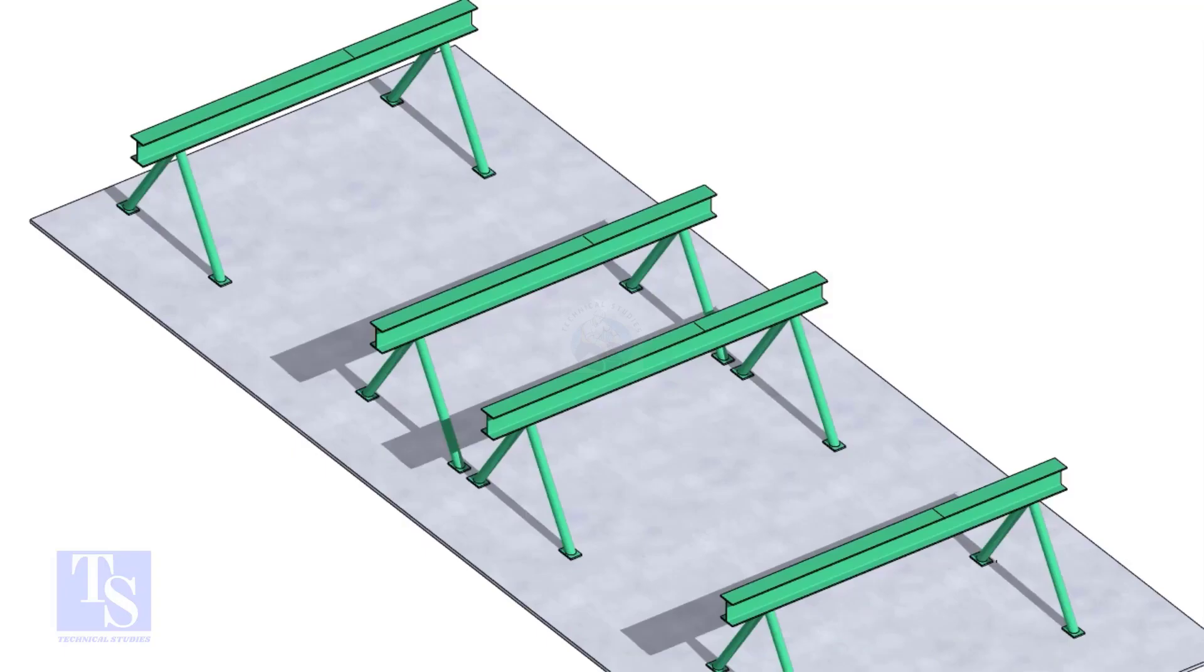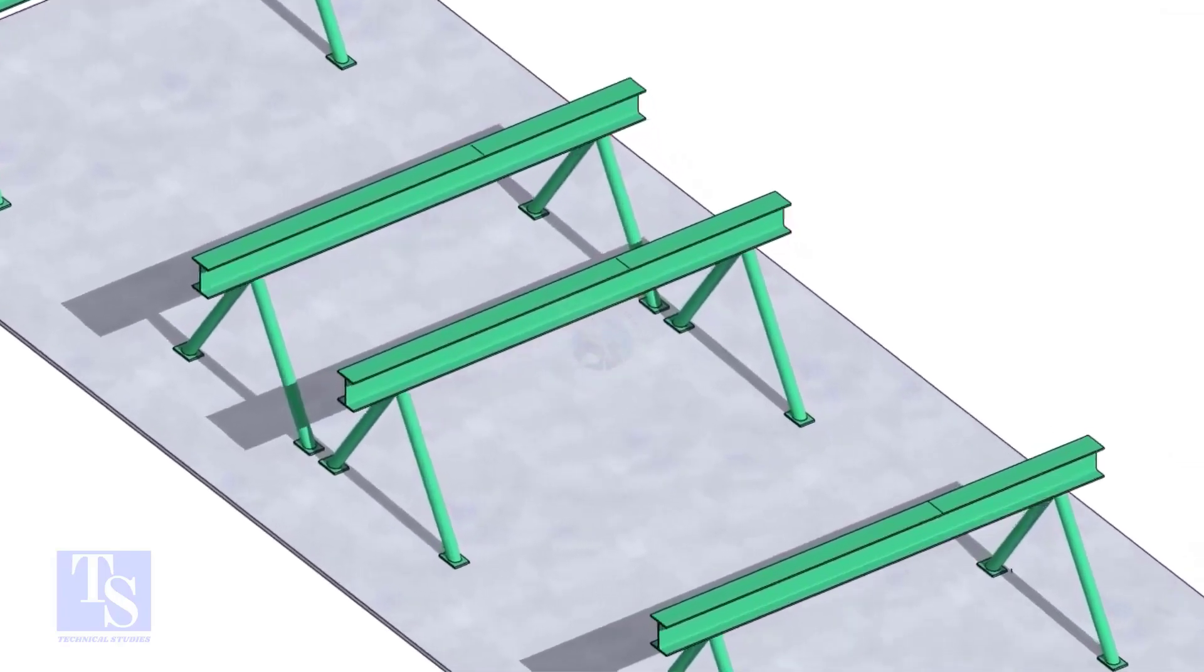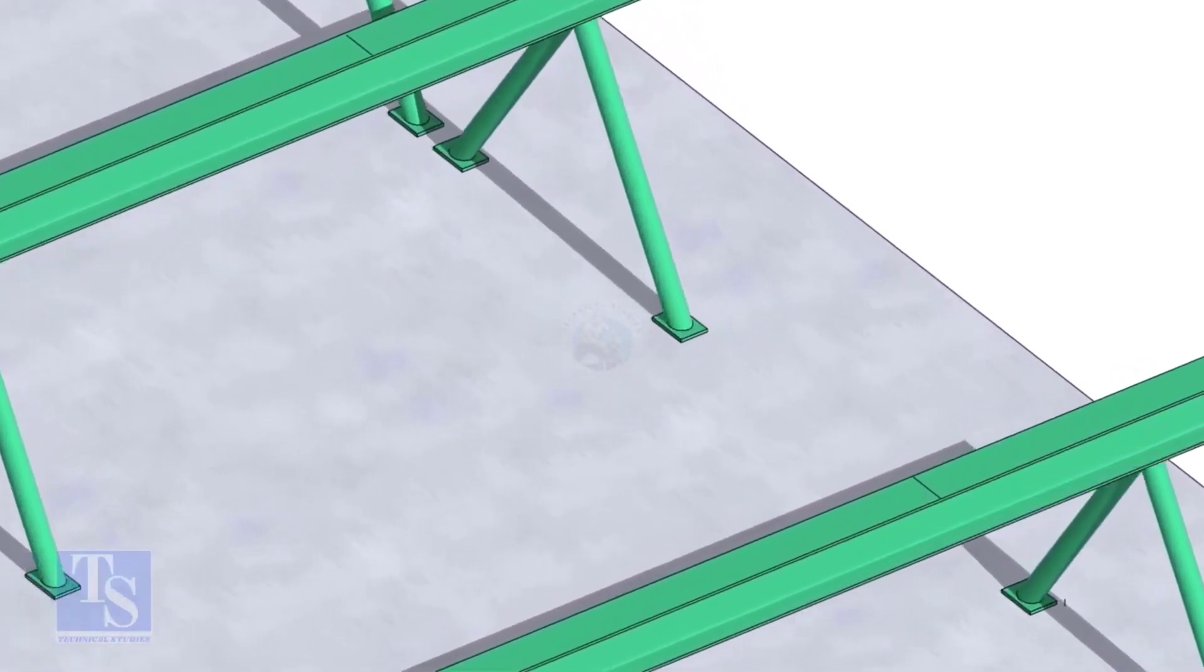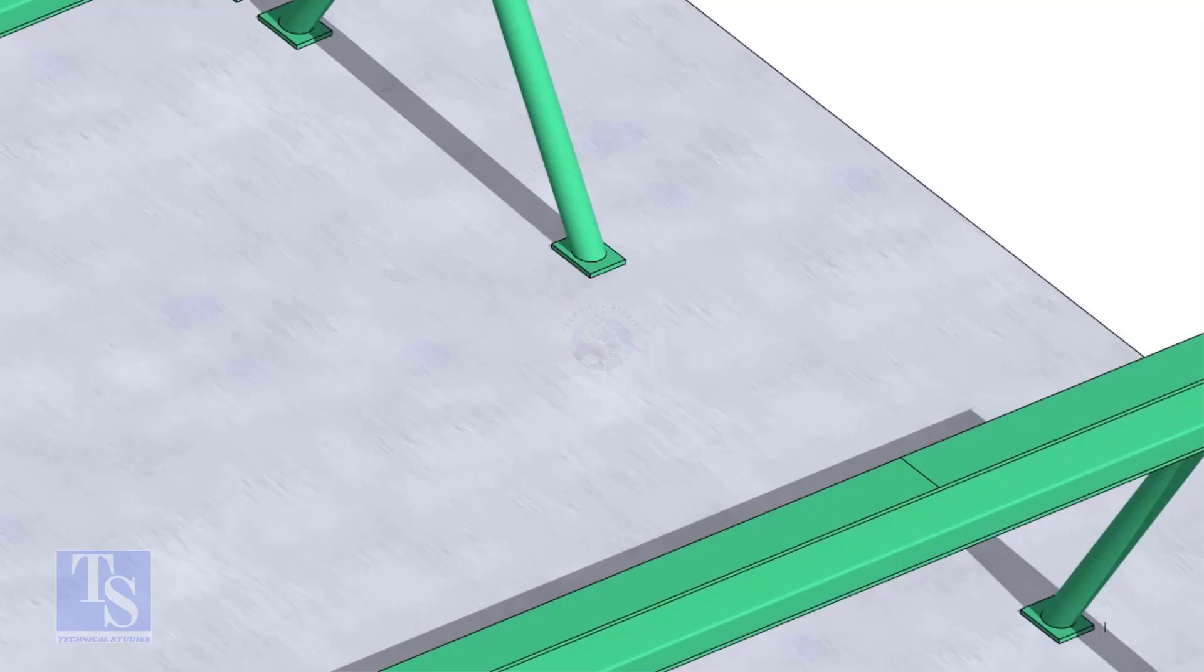After leveling the stands, put the piano wire roughly 1 meter away from both ends of the supports and mark lines on the stands. Tack weld stopper plates on these marks.